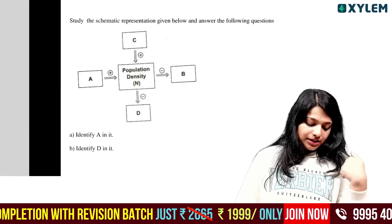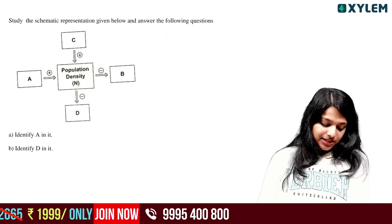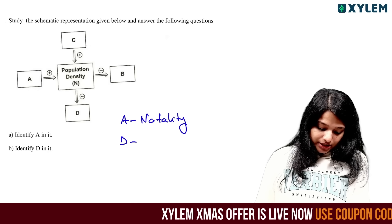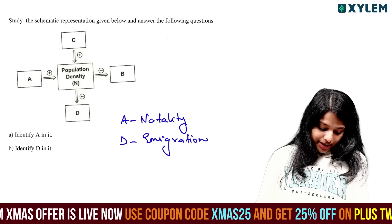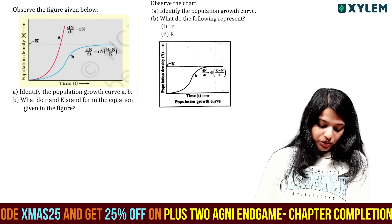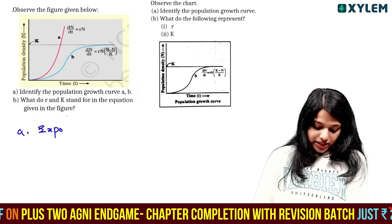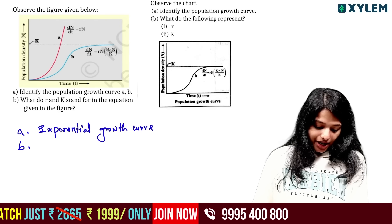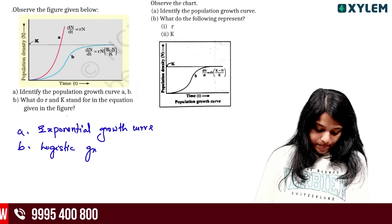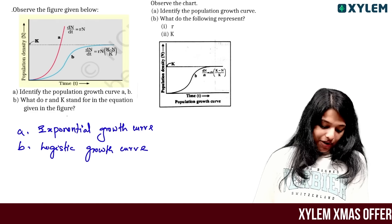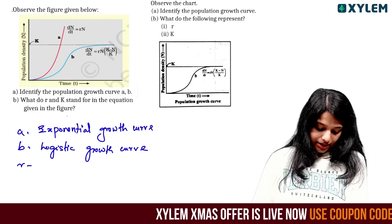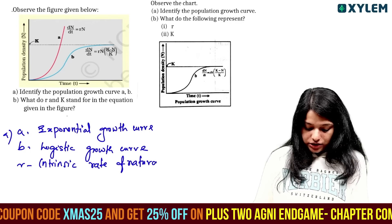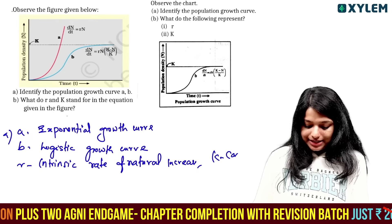In a population, what adds to population density: A is natality (birth rate), B is immigration. D is emigration. Observe the figure given below - identify the population growth curves A and B. A is exponential growth curve. B is logistic growth curve. What do R and K stand for? R is the intrinsic rate of natural increase. K is the carrying capacity.